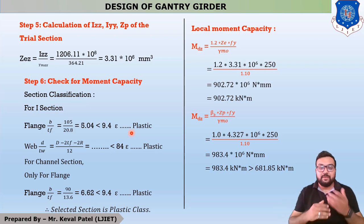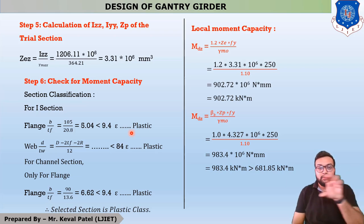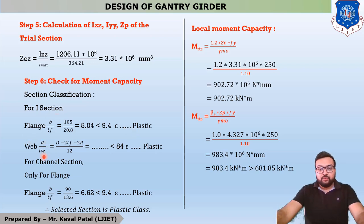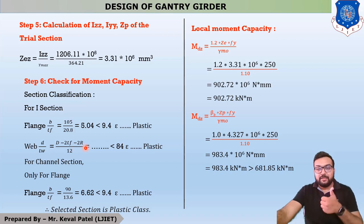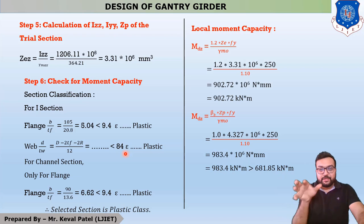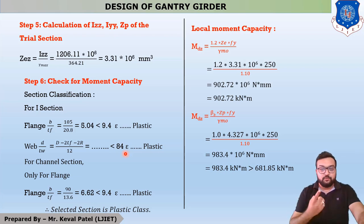Similarly, for the web section, the third row in the table mentions the web of an I, edge, and box section. The equation is d/Tw, where small d = D − 2Tf − 2R, divided by Tw which equals 12. After putting in all values, the answer is less than 84ε. So the flange is in the plastic class and the web is also in the plastic class. This means the selected I-section is classified as Class 1, which is plastic.